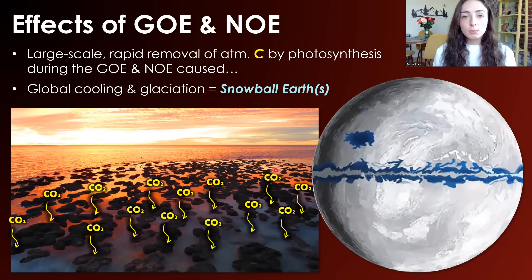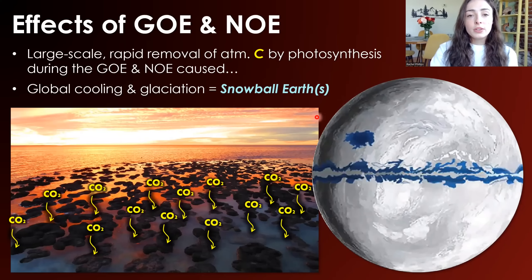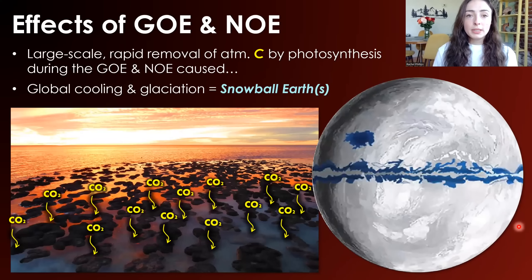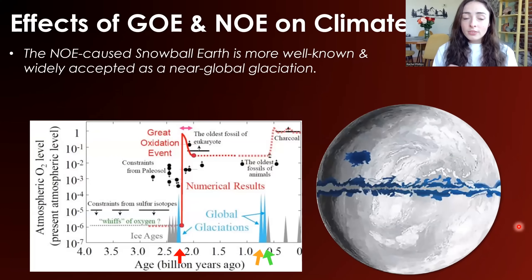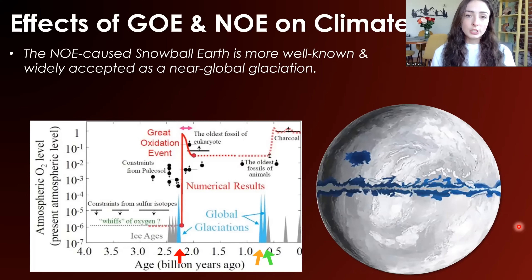Both of these pulses of oxygenation — the GOE and the NOE — are associated with major cooling and major glaciation events that we call Snowball Earth events, because they covered Earth in ice much more completely than any ice age we've had after the NOE. Of these two, the NOE-associated Snowball Earth event is much more well-known and widely accepted as a near-global to global glaciation event.